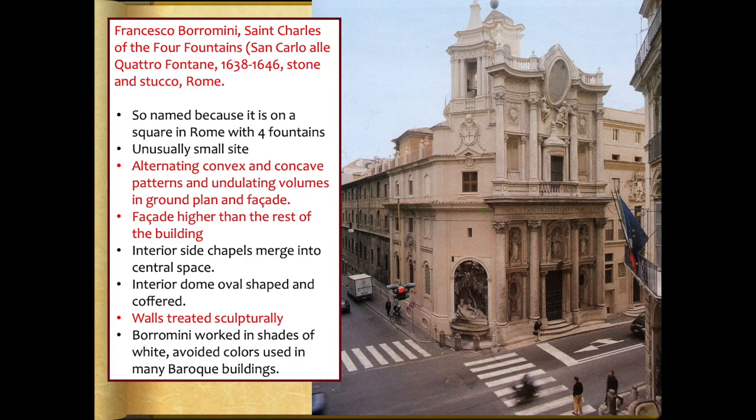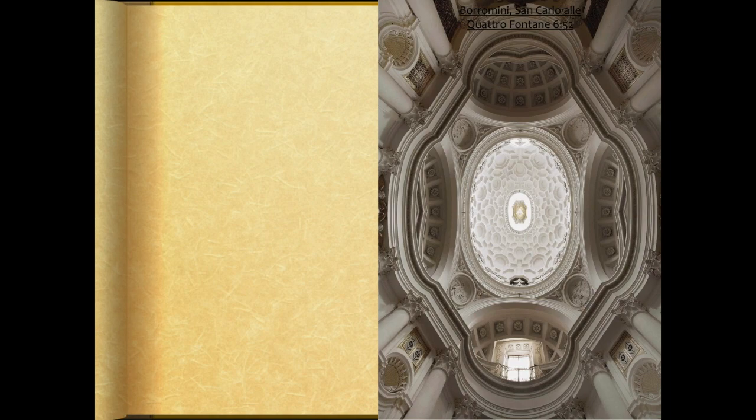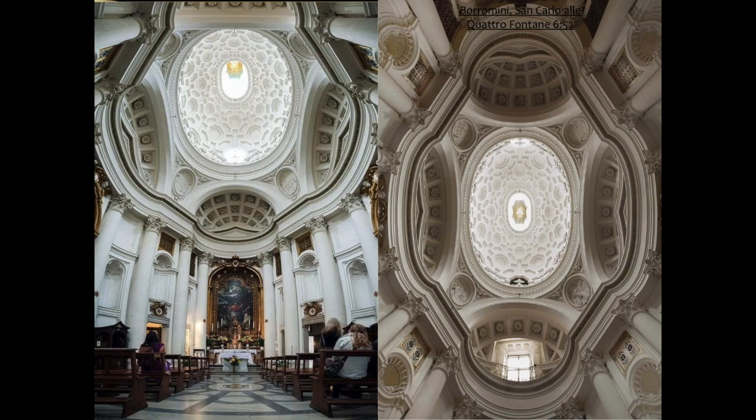The interior side chapels merge into one central space, and the walls are treated almost like sculpture. Borromini worked in shades of white and avoided the colors used in many other Baroque buildings. On the inside, it is a pure white space meant to evoke what the color of heaven would look like — very little gold except at the altar. It is a very pure, restrained space, which distinguishes it from more ornate Baroque interiors.